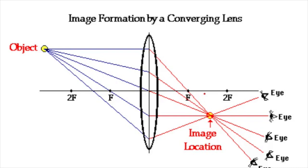The two types of lenses, converging and diverging lenses, refract light in a unique way. As the diagram shows, a converging lens, also known as a convex lens, refracts incident light rays coming in parallel to the principal axis towards the focal point. And here are the focal points.